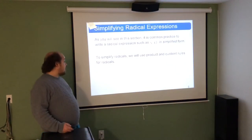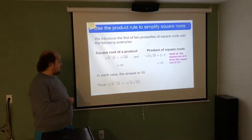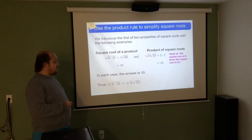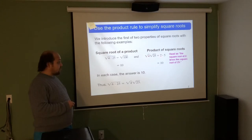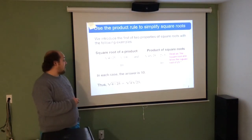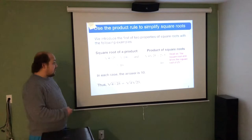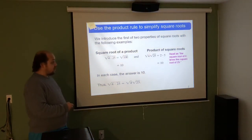To simplify radicals, we're going to use product and quotient rules for radicals. The product rule says that if I have something like 100 that can be broken up into 4 times 25 under the radical, I can break it up as radical 4 times radical 25. The root of 4 equals 2, the root of 25 equals 5, and 2 times 5 gives me 10 — the same as taking the square root of 100 directly.